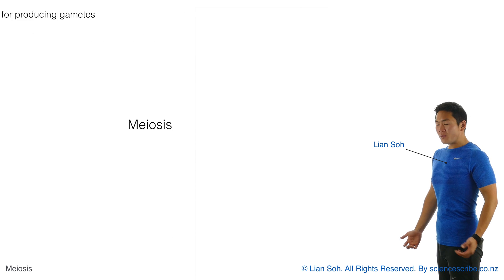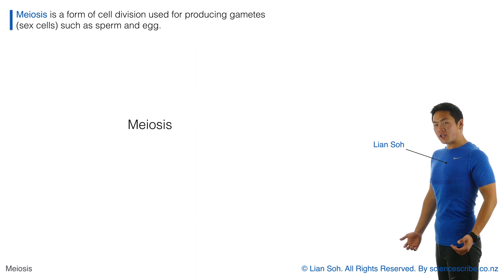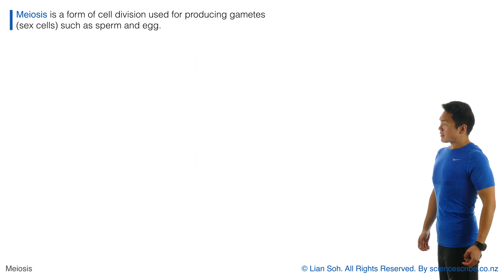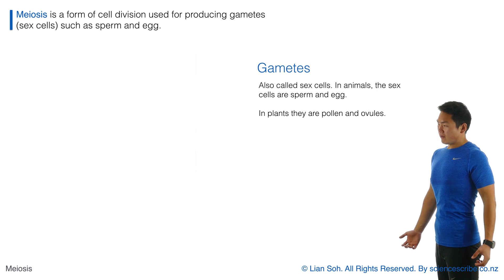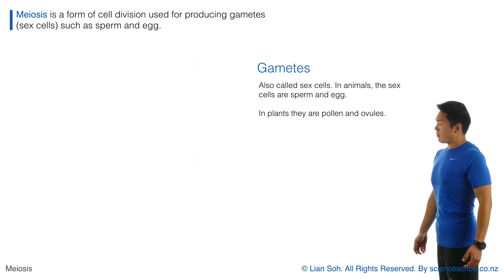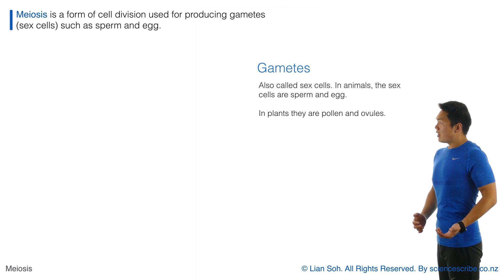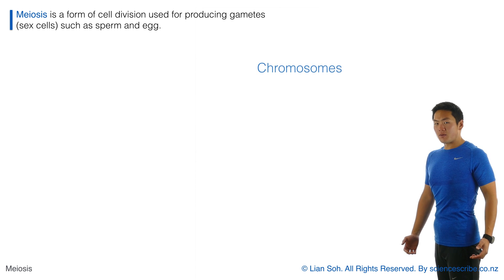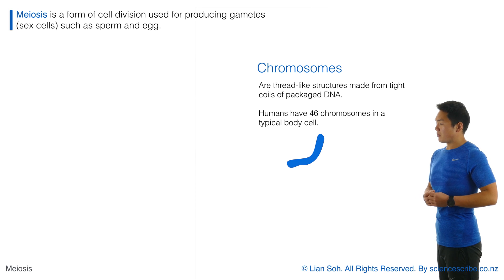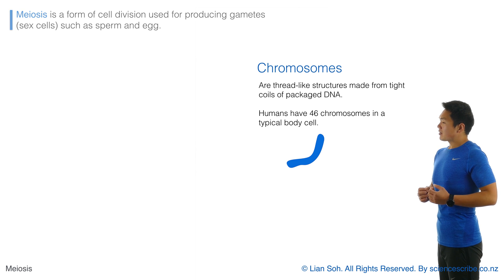Meiosis is a form of cell division for producing sex cells, also called gametes. In mammals, think of things like sperm and egg. The example I'm going to show you will use a cell with 46 chromosomes, which is the same number of chromosomes as in humans.